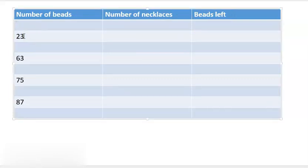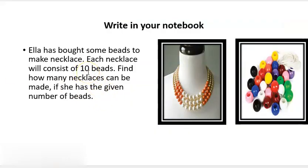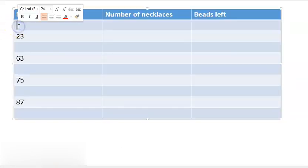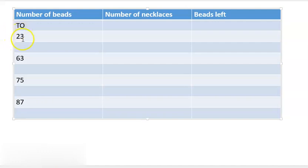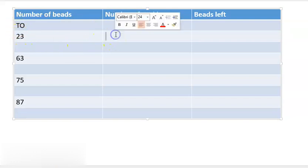The first number is 23. We are using here 10s and 1s — why? Because in the question she is using 10 beads for making a necklace. So 10 means the tens place, and we are writing T for 10s and O for 1s. On the 2 we write T, which means number of necklaces, so on T we have 2. She will make 2 necklaces.